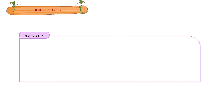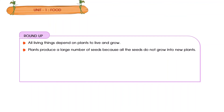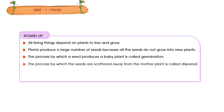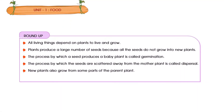Roundup: All living things depend on plants to live and grow. Plants produce a large number of seeds because not all seeds grow into new plants. The process by which a seed produces a baby plant is called germination. The process by which seeds are scattered away from the mother plant is called dispersal. New plants also grow from some parts of the parent plant. Different plants grow in different climates and seasons.